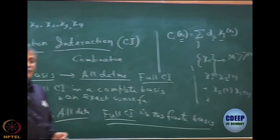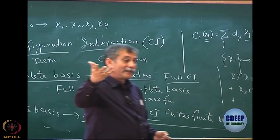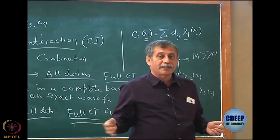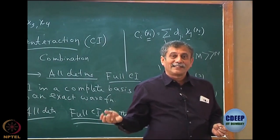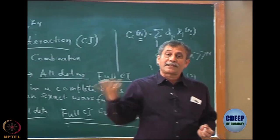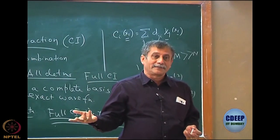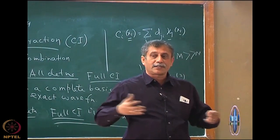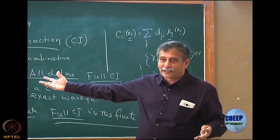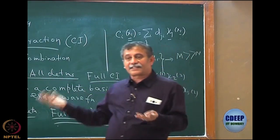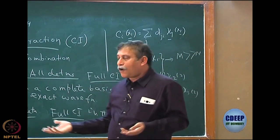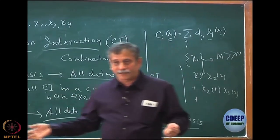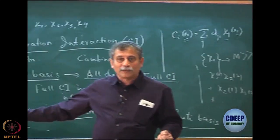Even full CI results differ depending on the basis. If I solve the Schrödinger equation using full CI, the results will differ because the basis is different. If you keep increasing the basis, the number of determinants grows in full CI and the results change. If you do not take all determinants, results will be different again. So there are many possible approximations.